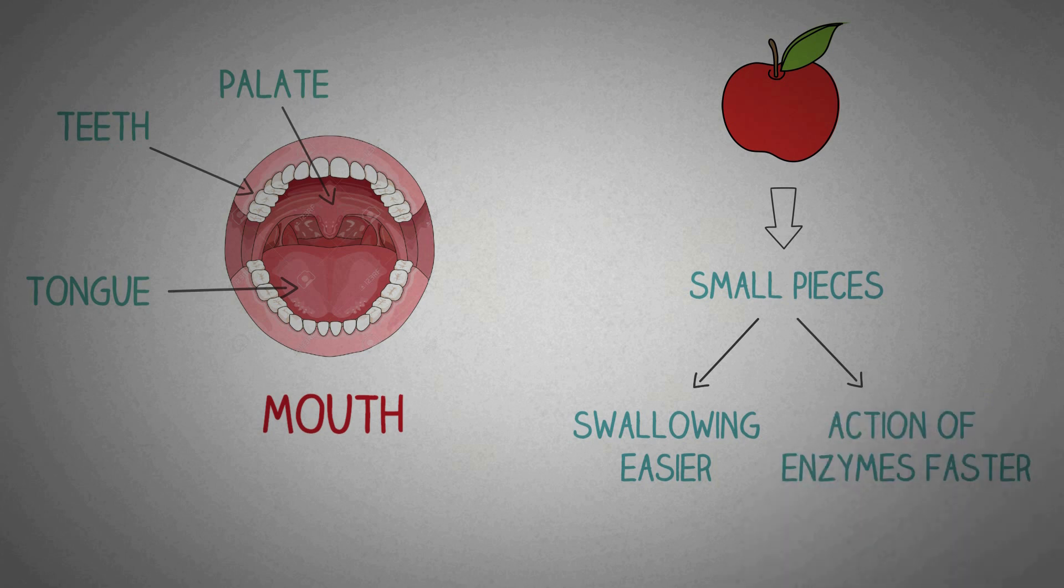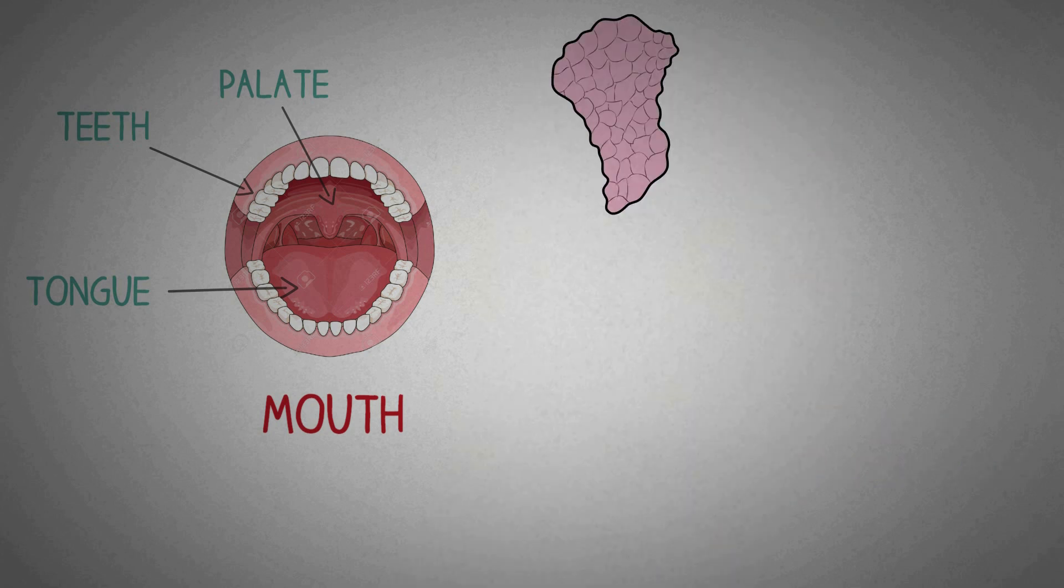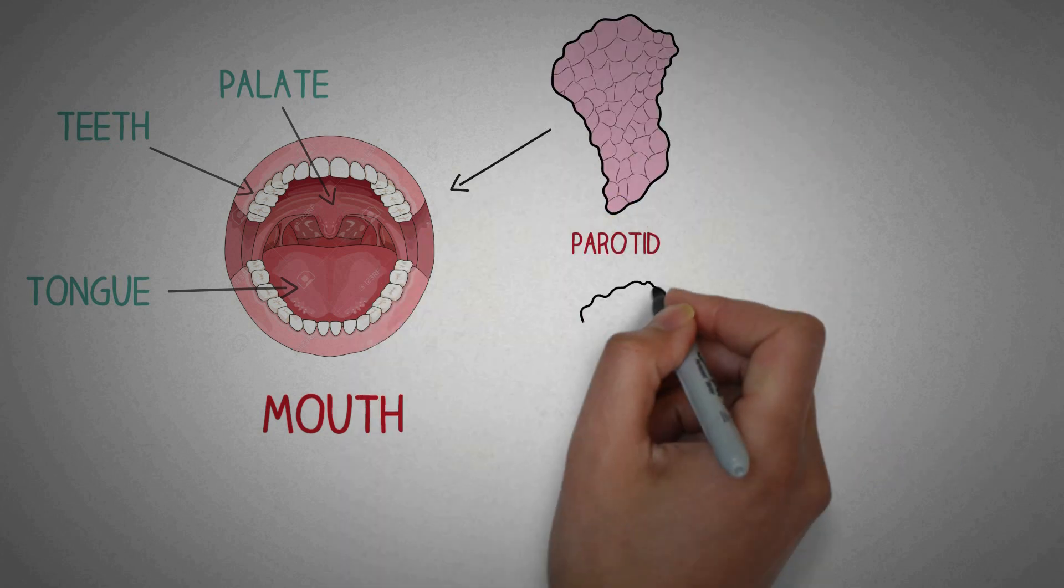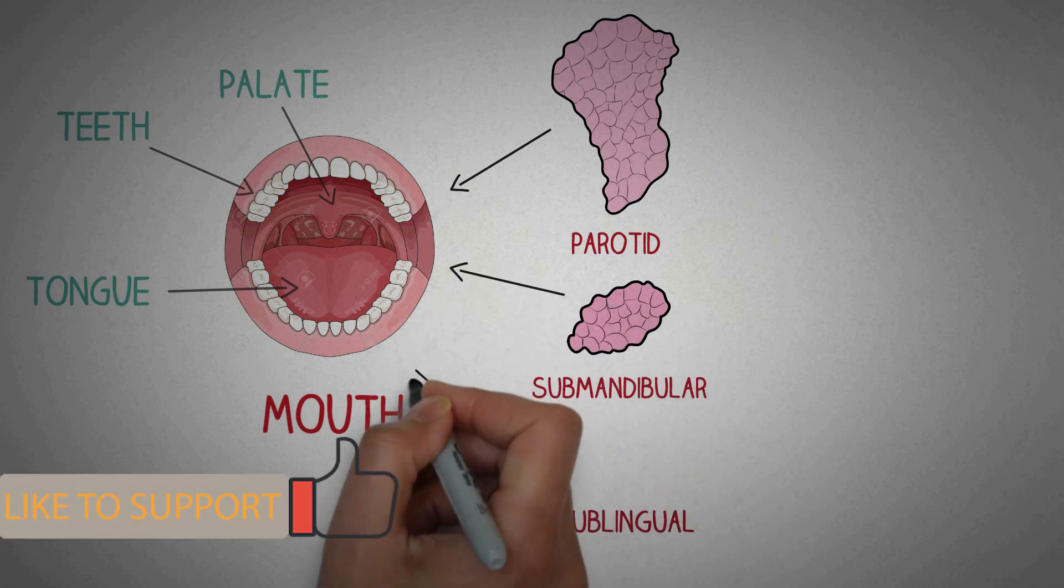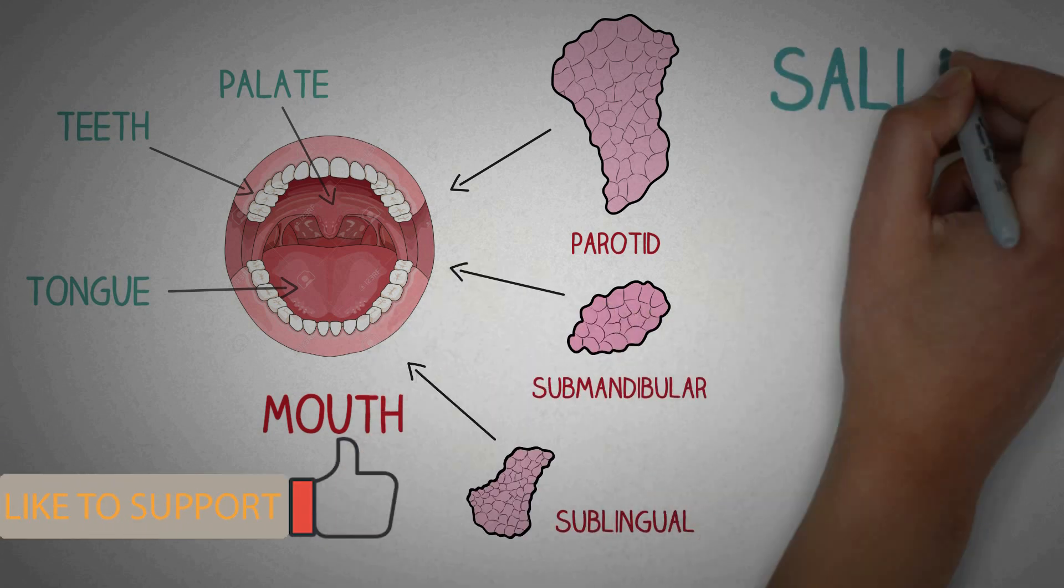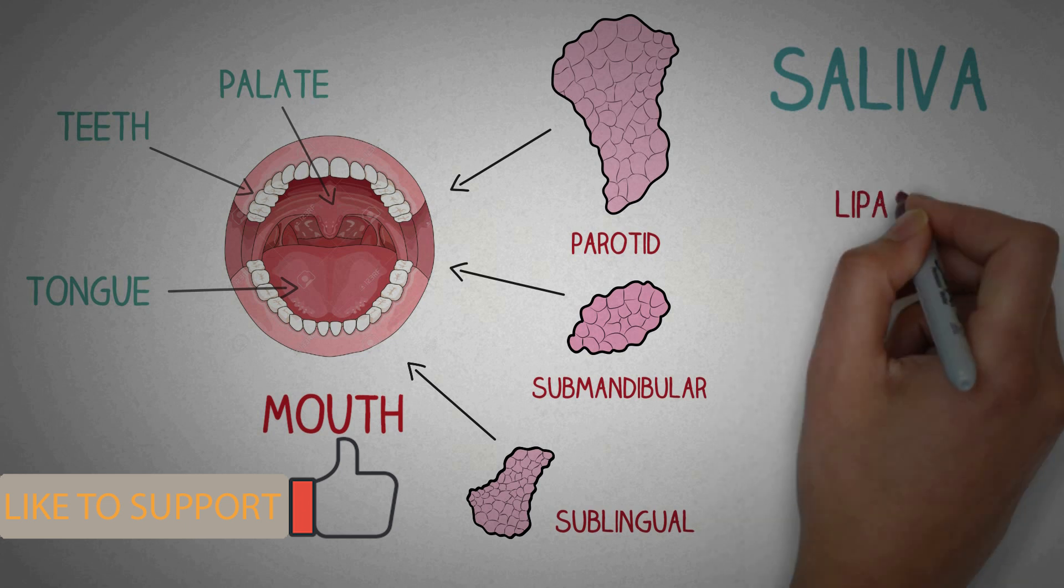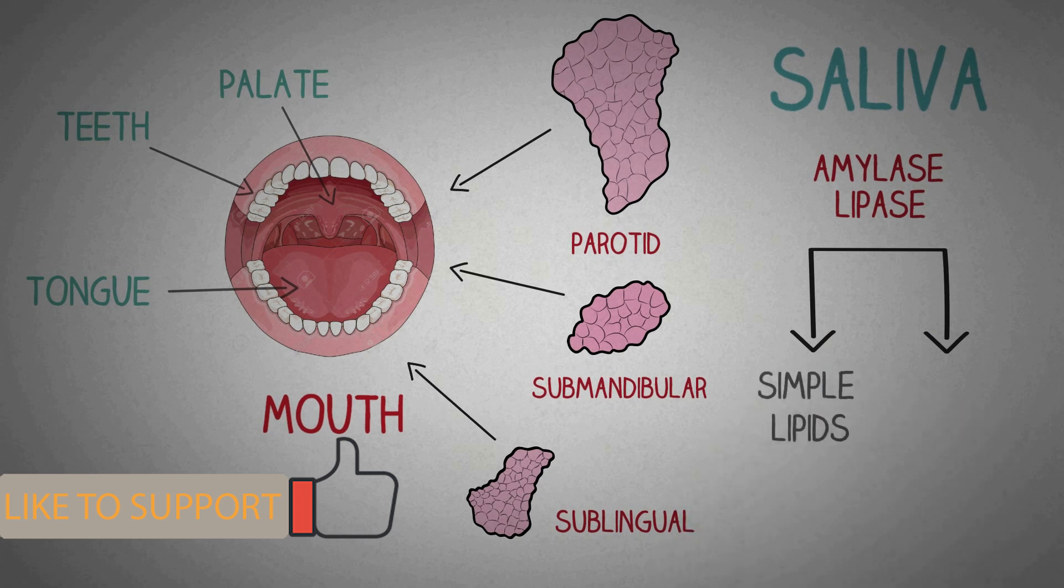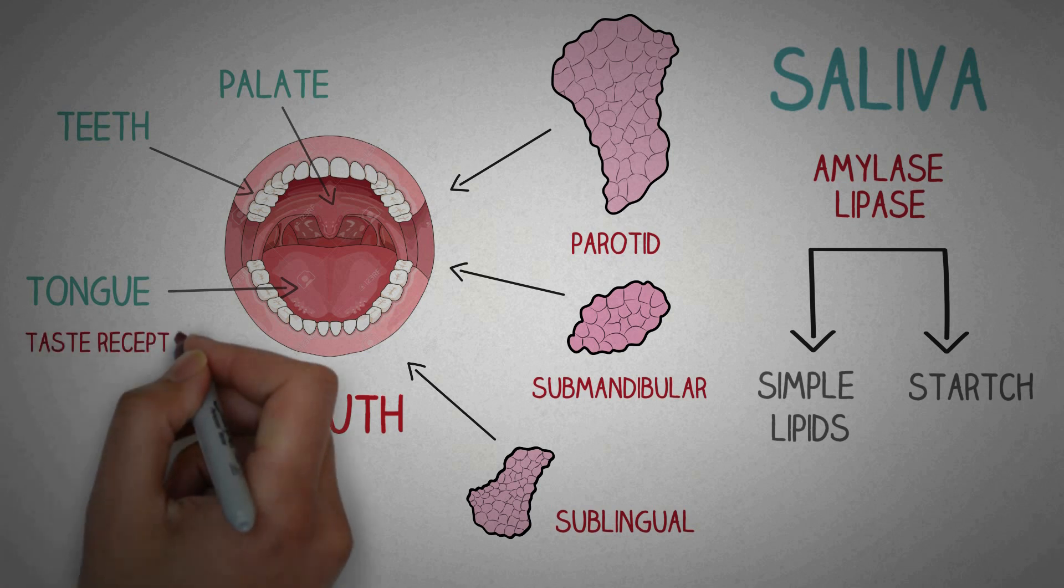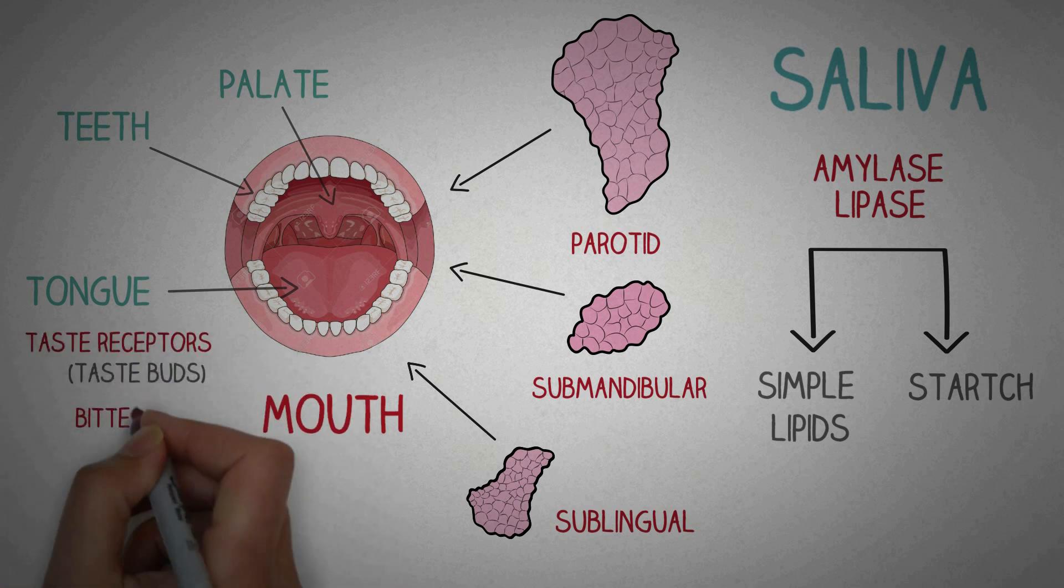The mouth also receives secretions from salivary glands. The parotid gland, the submandibular gland, the sublingual gland and many minor salivary glands. The saliva contains two important enzymes, the amylase and lipase which help to start the digestion of starch by breaking it into smaller sugars and fats into simple lipids.